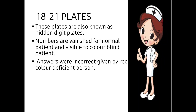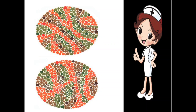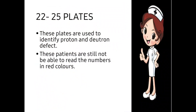Plates 18 to 21 are also known as hidden digit plates. Here the numbers are vanished for the normal patient — the normal patient is not able to see any numbers, but the color blind person can see the numbers. So if you cannot see the numbers, you are a color normal person; if you can see them, you are color blind.